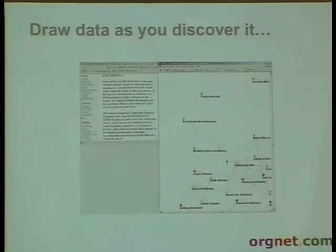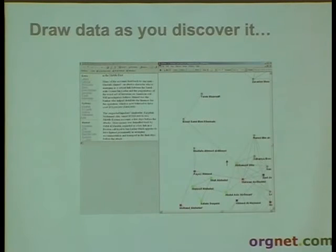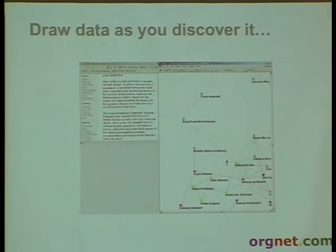Another way to do it, if you have software like what we have, is you can just draw the links in. We have tools that allow you to draw the network, and as you're drawing it, the database and links get created. This is what I was doing with the 9-11 network — basically reading the New York Times, Washington Post, LA Times online. When I found a new relationship, I'd get the link tool, drag from one node to the other, fill in a dialog box about the relationship, and the network is complete.